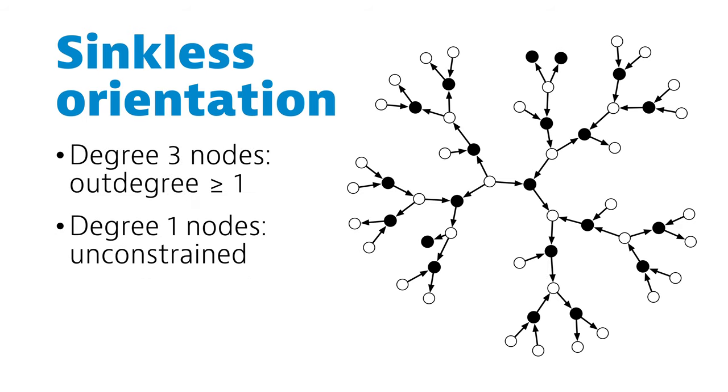And the problem is simply this. Orient the edges so that all degree 3 nodes have at least one outgoing edge. So this is good.